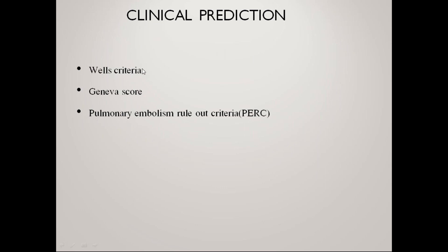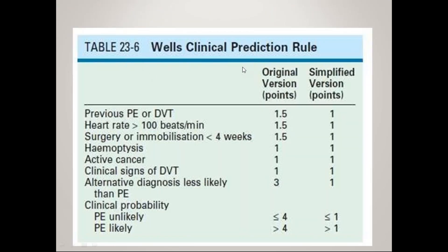Coming to clinical prediction: Wells criteria, Geneva score, and pulmonary embolism rule-out criteria are the clinical prediction tools. In the Wells criteria, a previous pulmonary embolism or DVT scores one point; heart rate more than 100 beats per minute scores one point; surgery or immobilization less than four weeks scores one point; history of hemoptysis, active cancer, clinical signs of DVT, and alternative diagnosis less likely also each score one point. If the clinical probability of pulmonary embolism is unlikely, it scores less than one point; if likely, it scores more than one point.